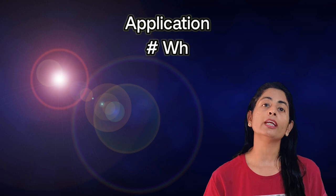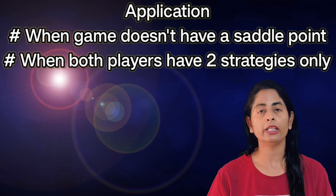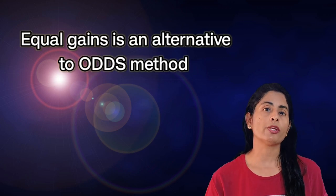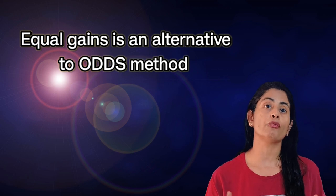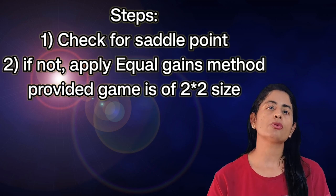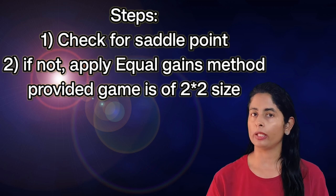This method is applicable only in cases where both players have two strategies only. As we have already seen, in such cases the odds method can also be applied. But sometimes if a question asked in the examination is of 15 or 20 marks, you cannot apply the odds method as it takes hardly two steps to solve. So first you have to check whether the problem has a saddle point or not. If it does not have a saddle point, you can go ahead with the probability or equal gains method.